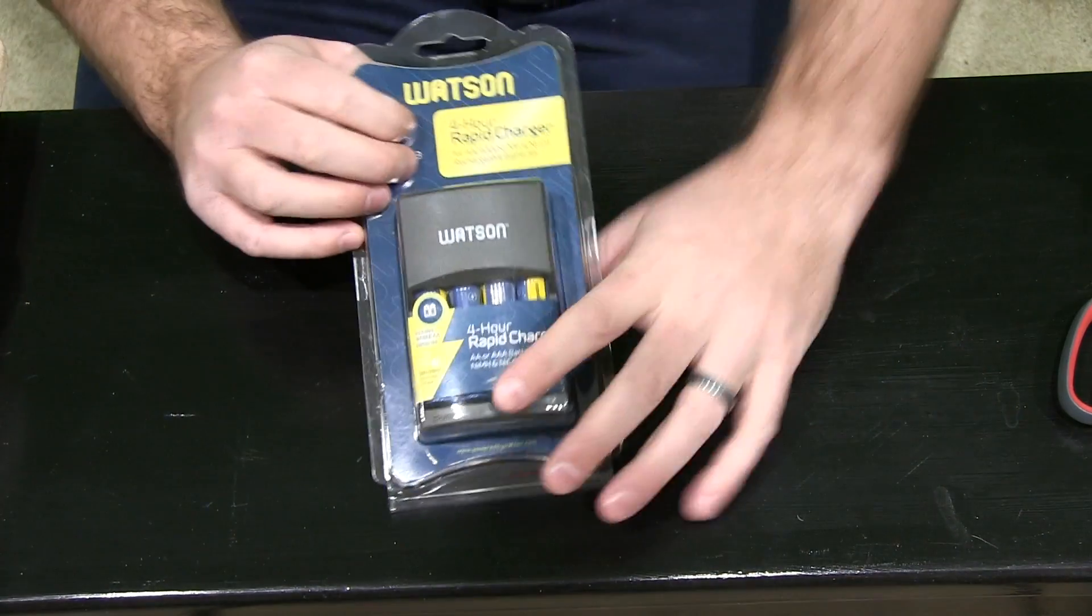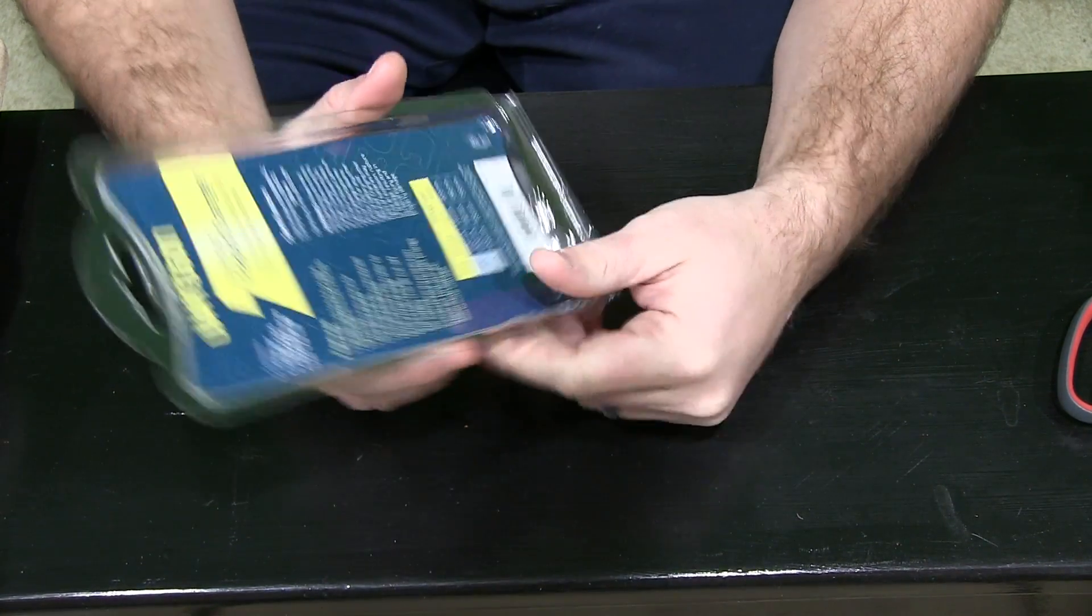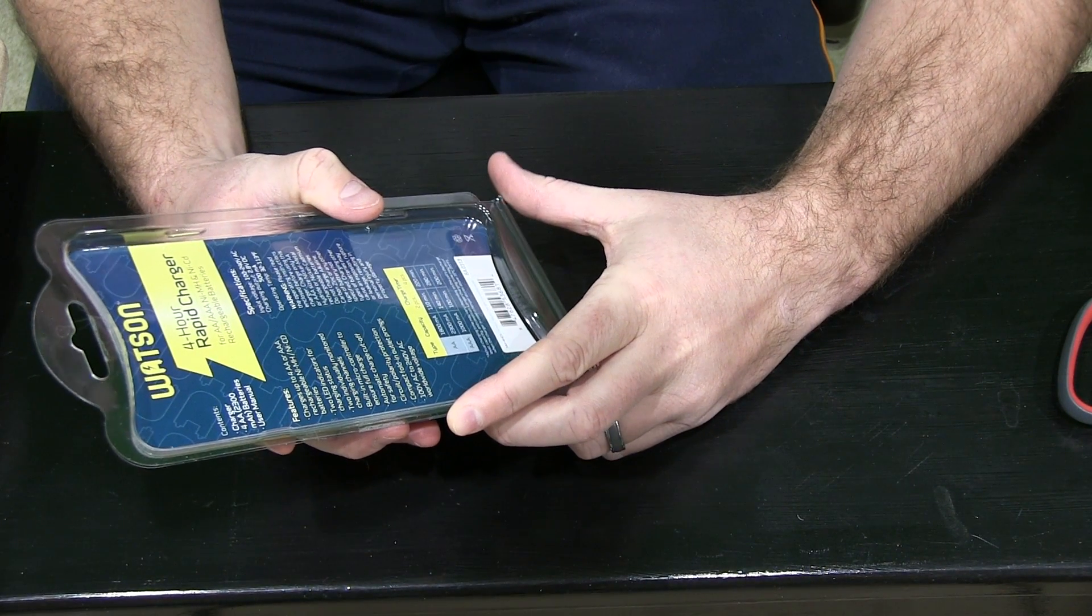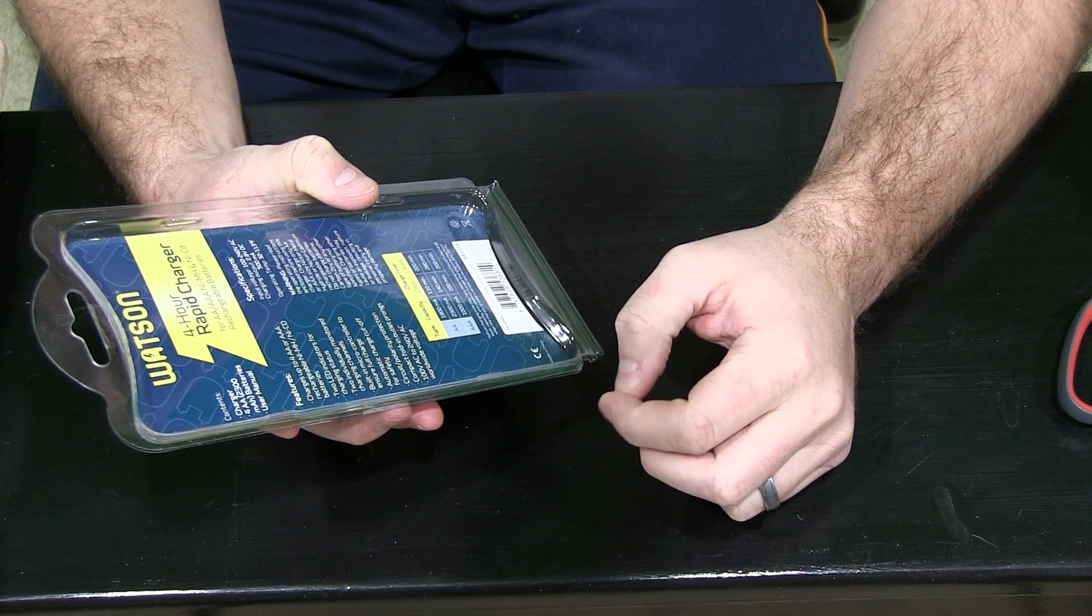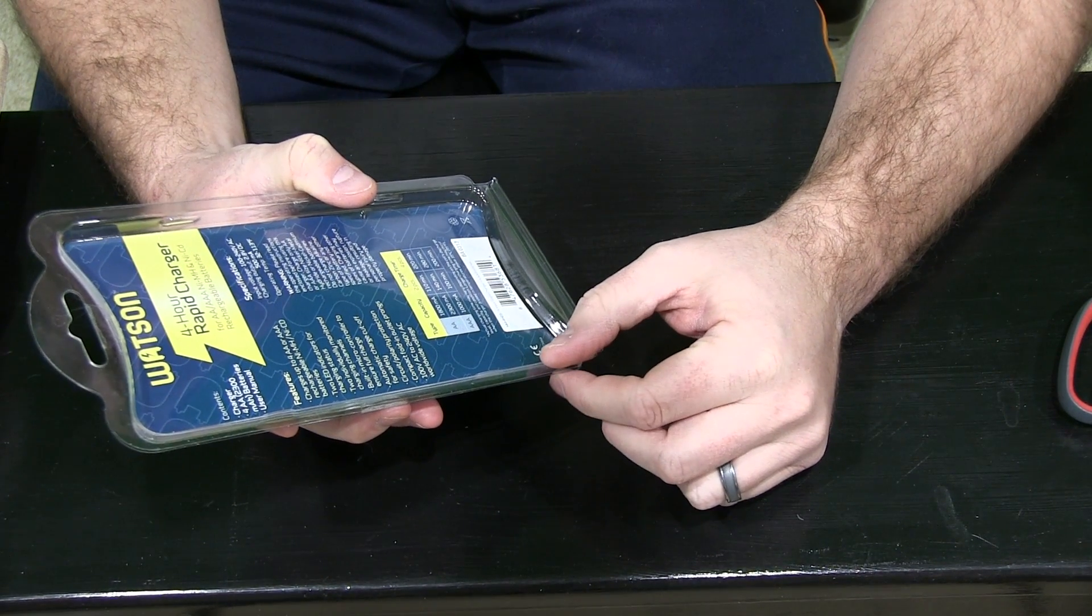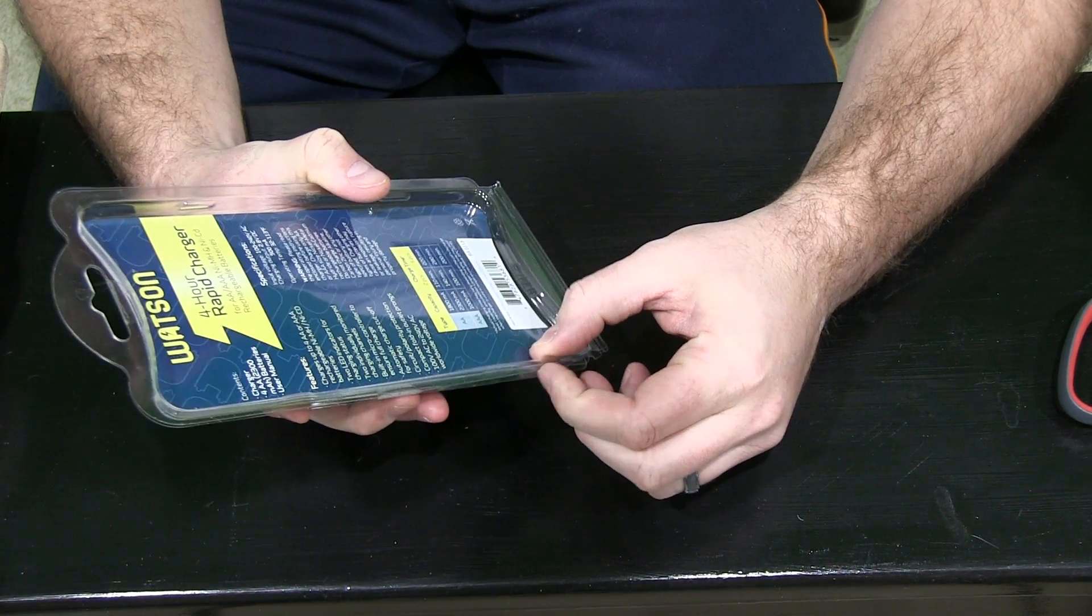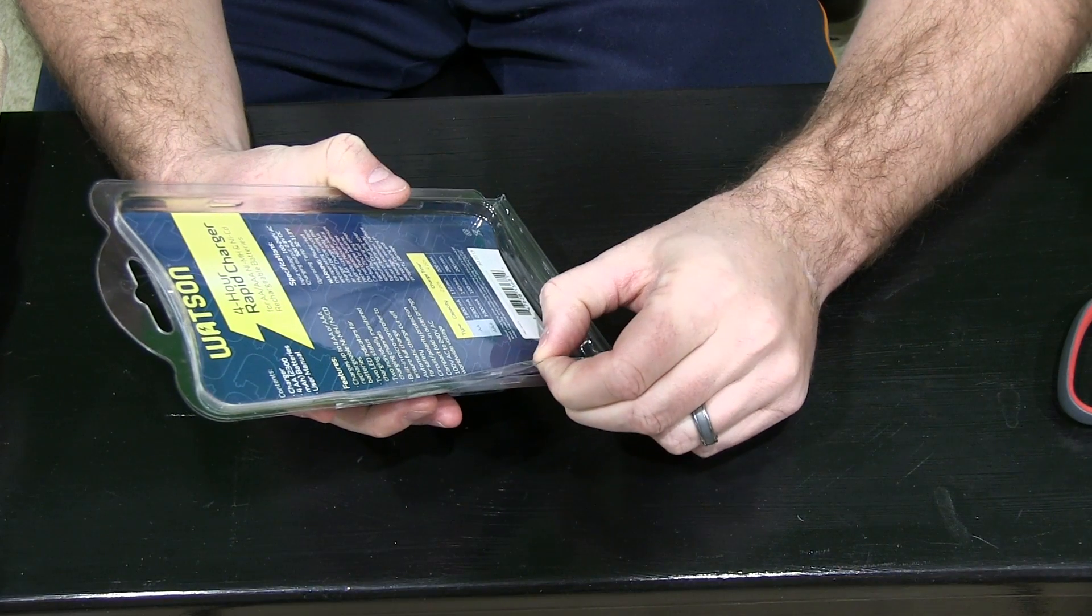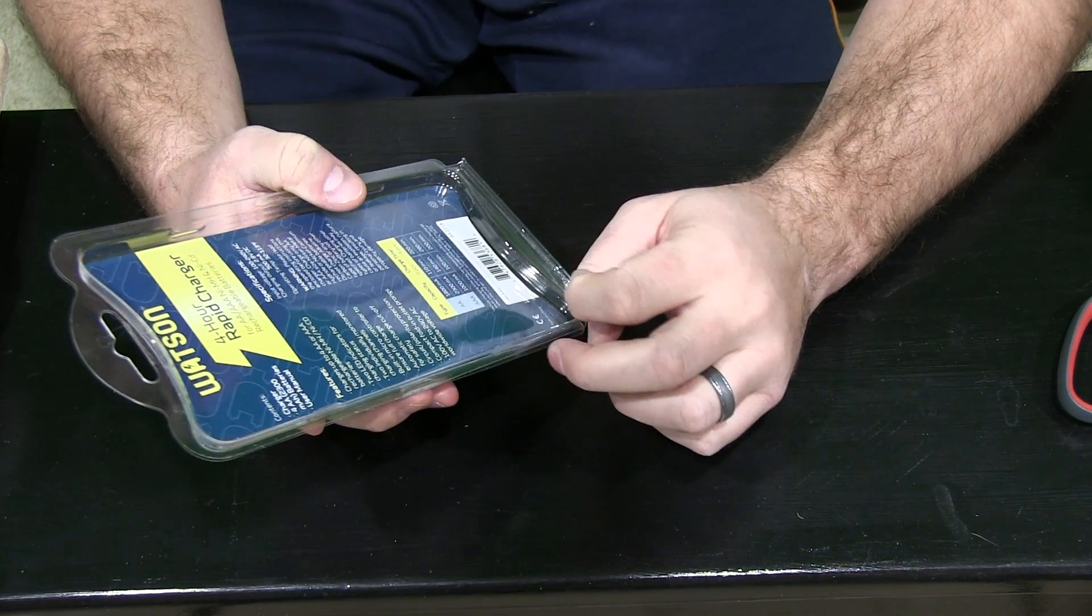It comes with four rechargeable AAs and on the back it says features: charges up to four AA or AAA rechargeable batteries, two LED indicators for charging status, two individually monitored charging channels, built-in microcontroller to ensure full charge, automatic charge cutoff for safety. That's good, you don't want your batteries to blow up.